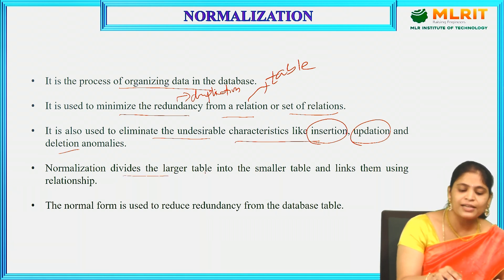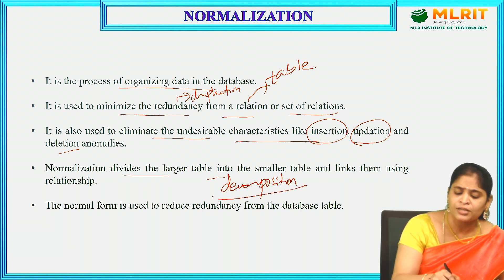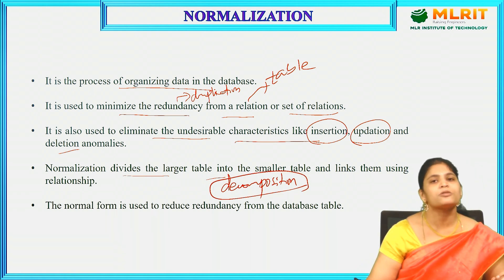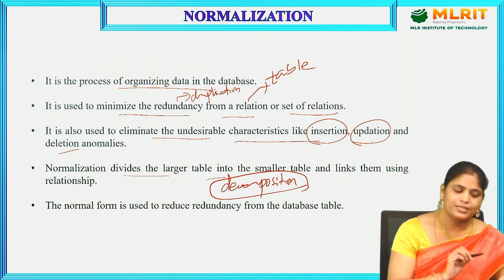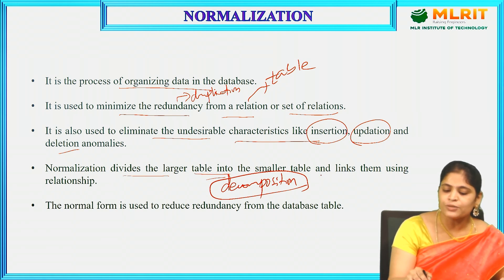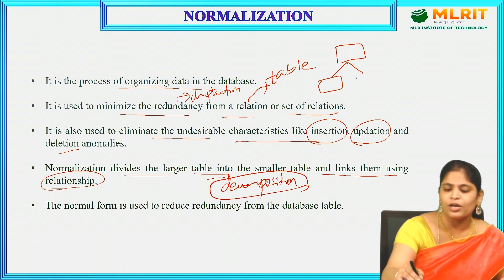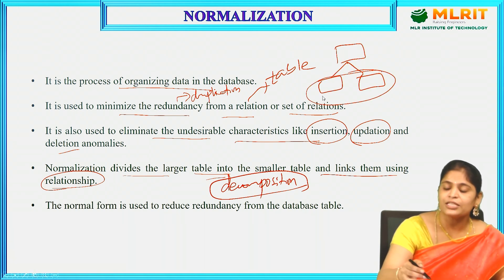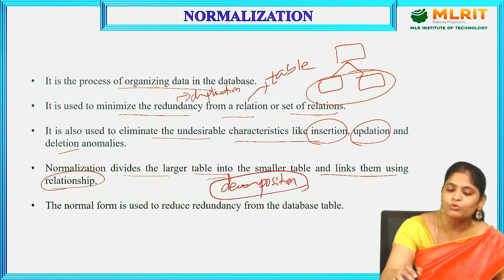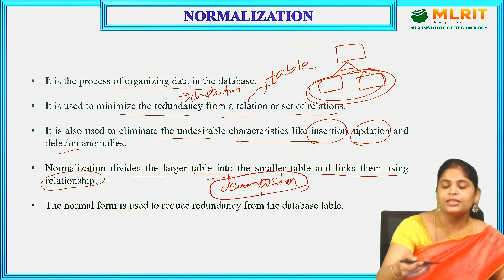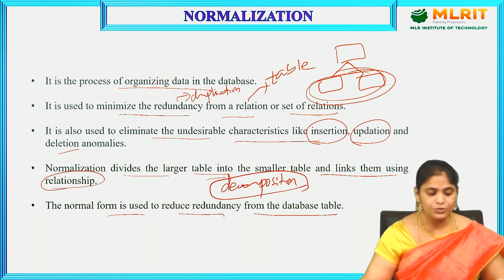Normalization reduces these problems by decomposition. What is decomposition? It means splitting a table into two or more sub-tables. Normalization divides the larger table into smaller tables and links them using relationships. We divide one large table into smaller tables, then relate those tables using foreign keys or joins. The normal form is used to reduce redundancy from the database table — that is the ultimate goal.